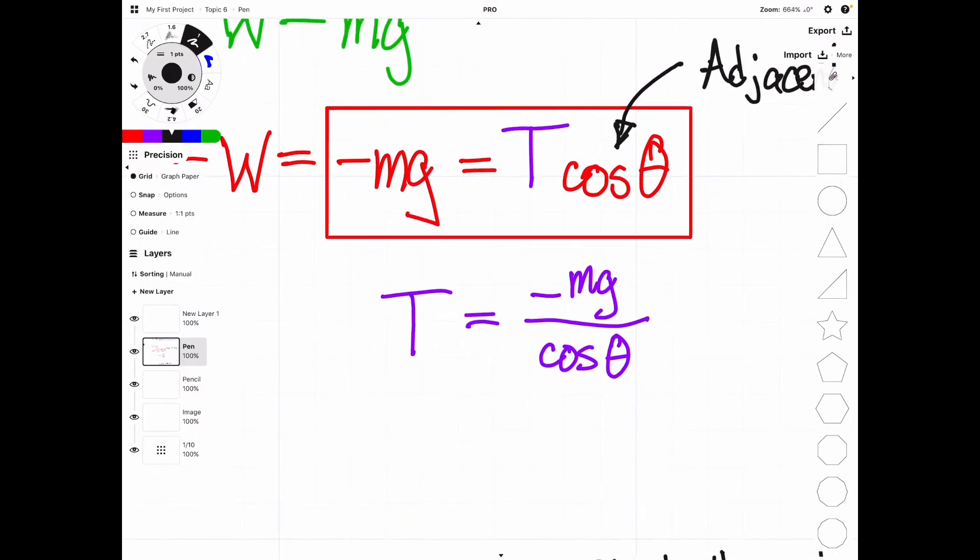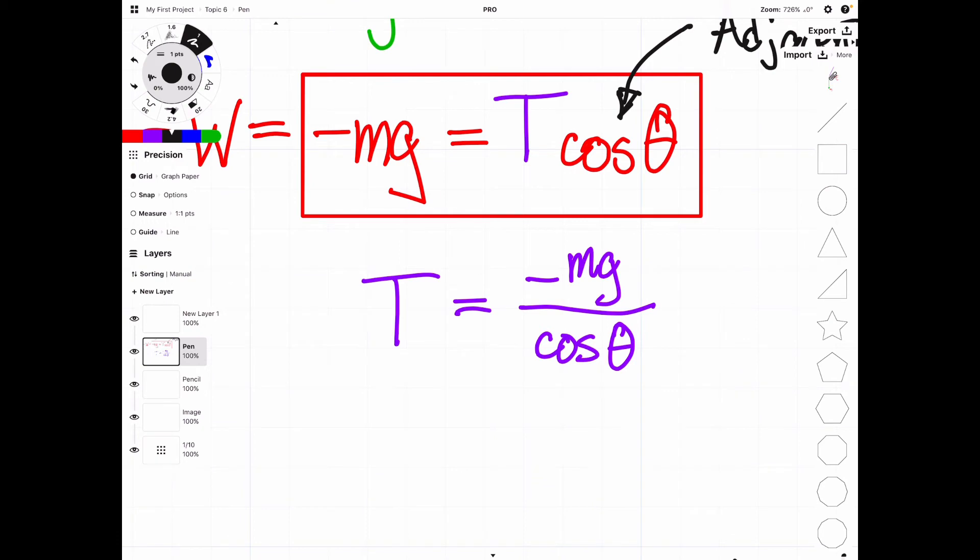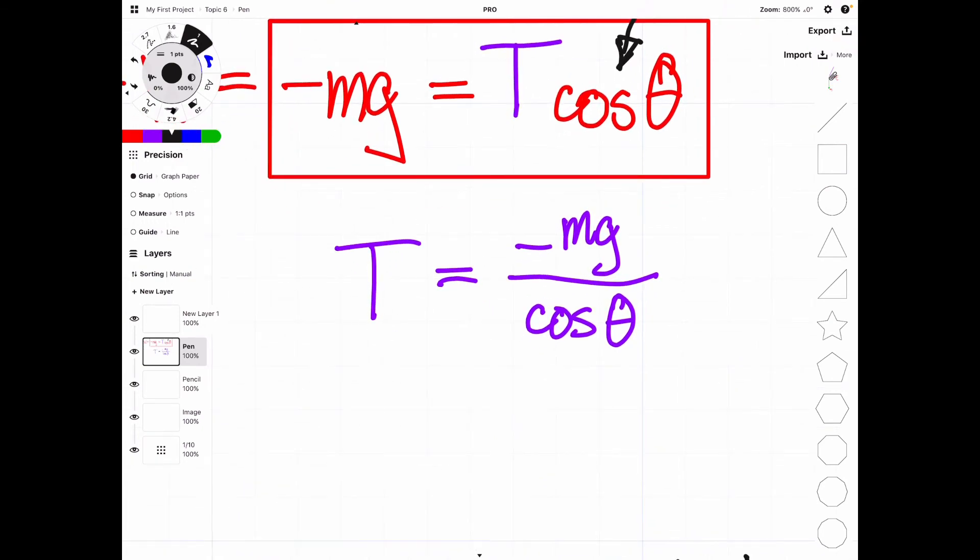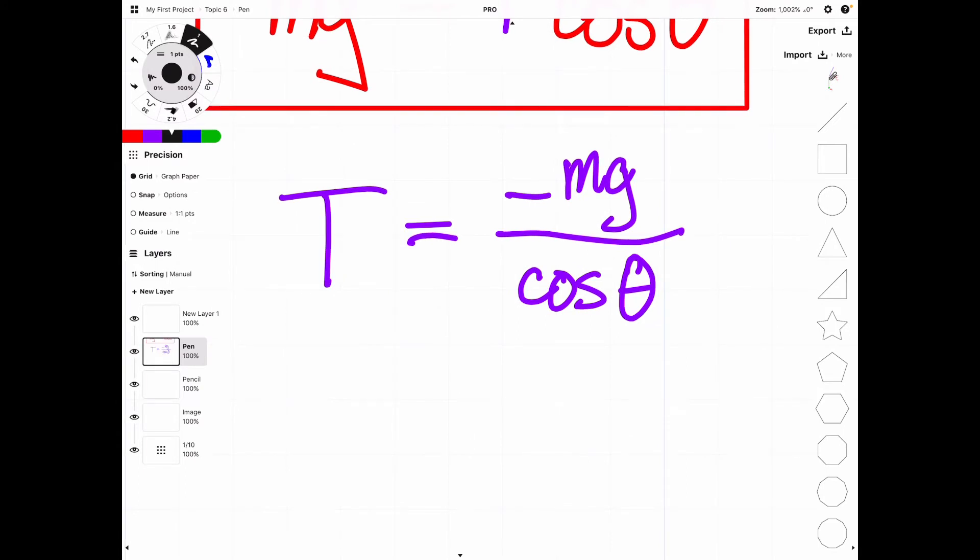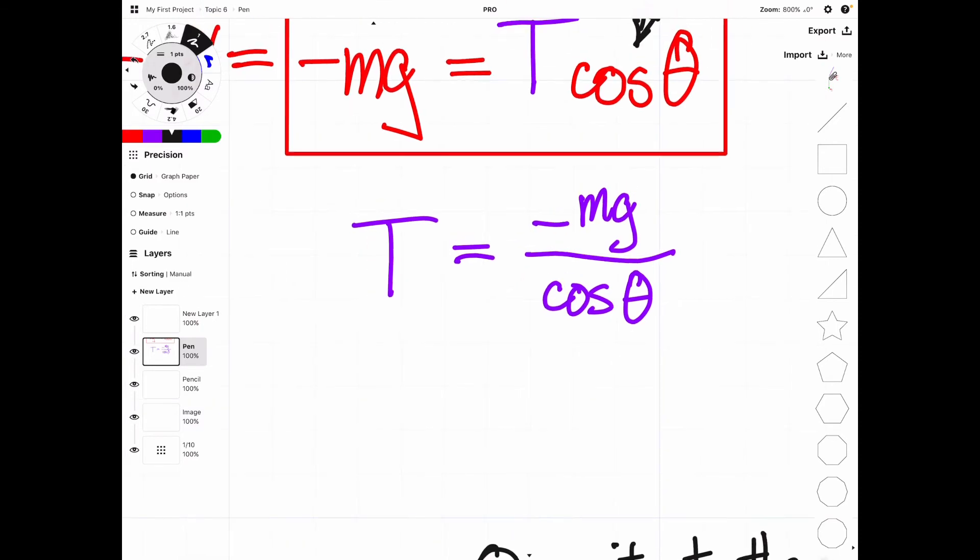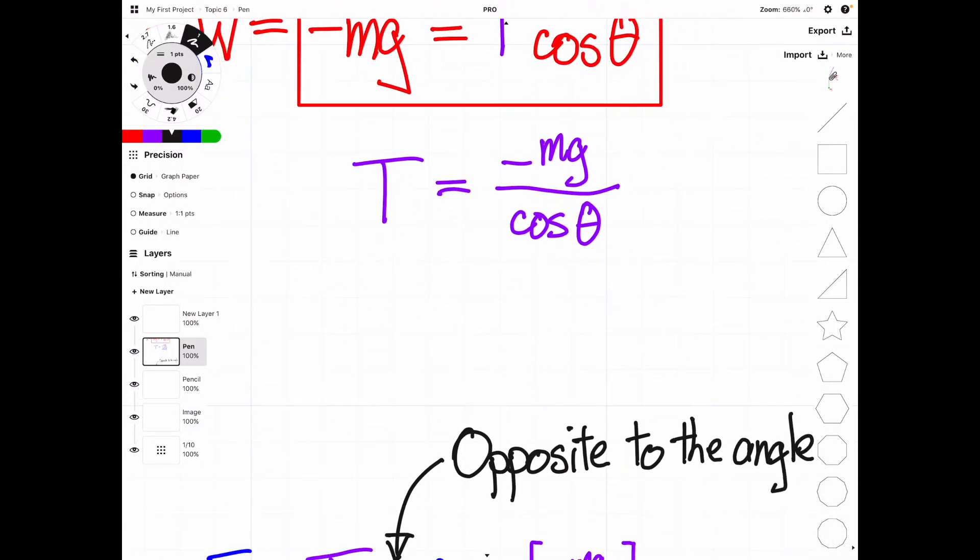So once we have that information, we can then solve for tension. Nice. So if we know the angle and we know the mass of our object, we can now solve our equation for tension and plug in those values.